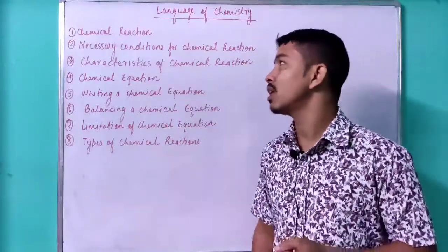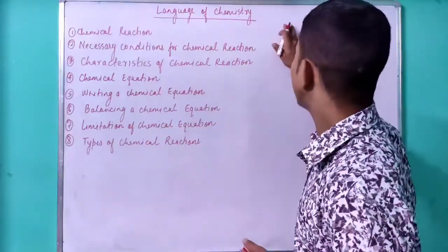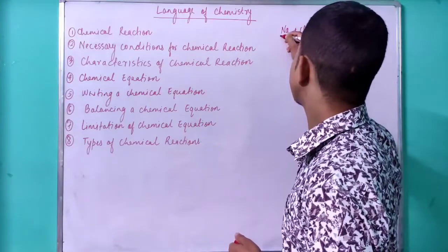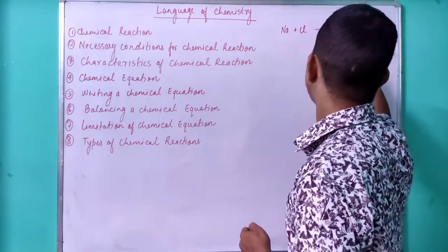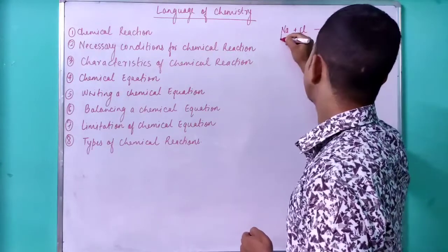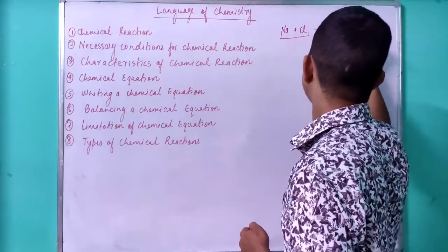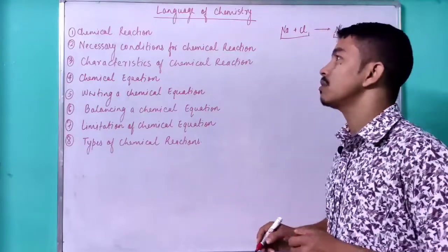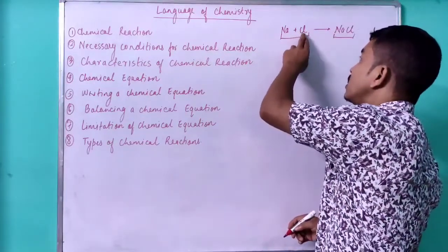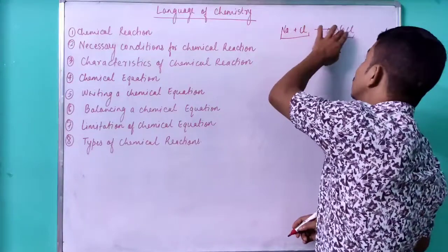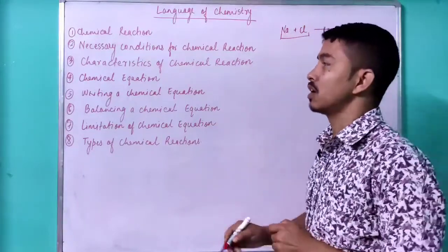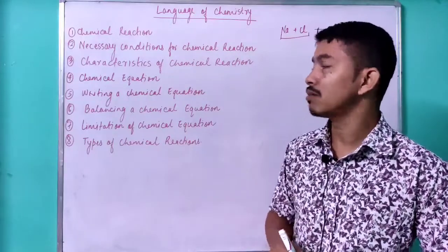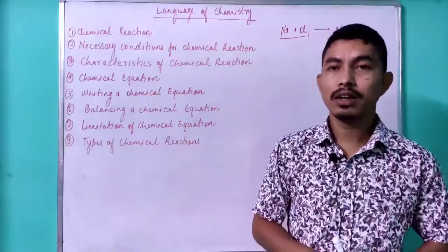In chemical reactions, two reactants — the reactants are those on the left-hand side, like sodium and chlorine — react to form sodium chloride. Those two are known as the reactants and on the right-hand side it is known as the product. In a chemical reaction, two reactants combine to produce a completely new product, and chemical reactions are always permanent in nature, meaning they are irreversible.